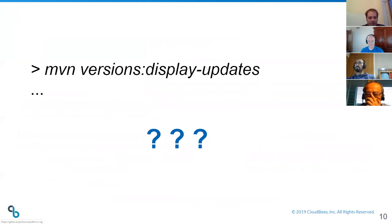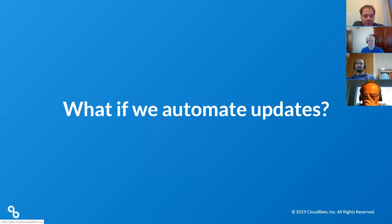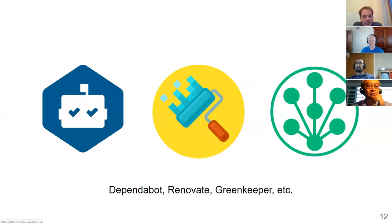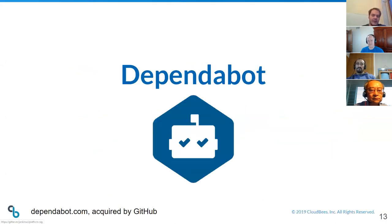For Jenkins, the most popular toolchain is Java and Maven. There are some plugins which use Gradle but Maven is most common. In Maven there are plugins which allow displaying and applying available updates, but if you just run them manually that's not what we want as an automation server project. We want to automate dependencies, and the most popular tools are Dependabot, which we discuss today, Renovate which is more focused on front-end projects, and Greenkeeper. All are available as GitHub applications.